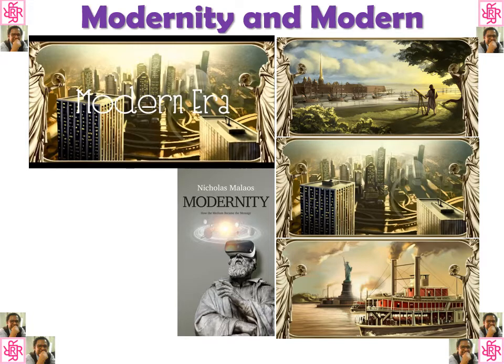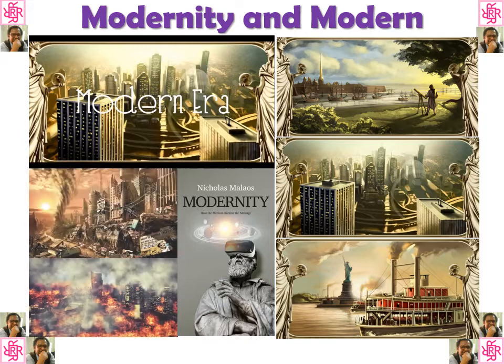Modernity covers developments that basically occur around the globe, and it is the aspect of the creation as well as destruction of cities. In the early 20th century there was the First World War, and then there was the Second World War, which destroyed a lot of cities in the world. Basically, the rebuilding process of cities gave birth to modernism and modern planning. That is called modernity and modern, and it also refers to the modern way of life.